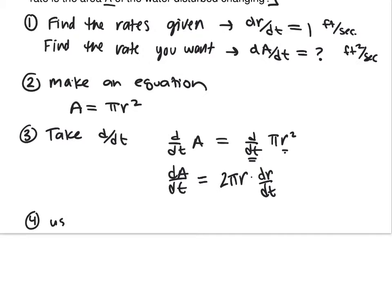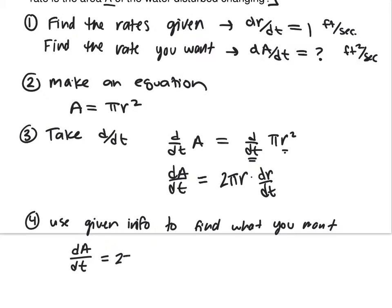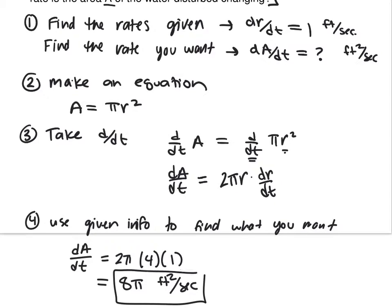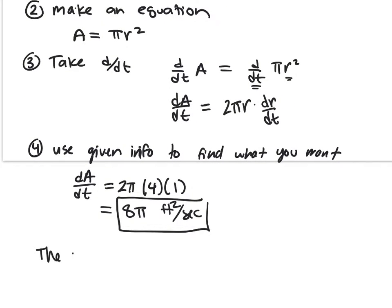Step four: use your given information to find what you want. Do you know dA/dt? No. Are you given a specific R? Yes — four. And are you given a dr/dt? Yes — it is one. So that would be 8 pi. And in these questions I do want you to give me units — feet squared per second. The area is increasing at 8 pi square feet per second.